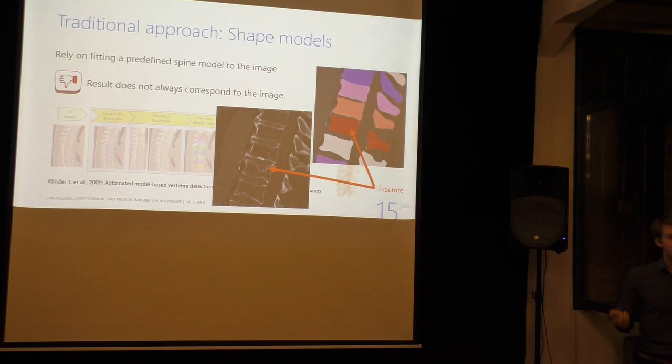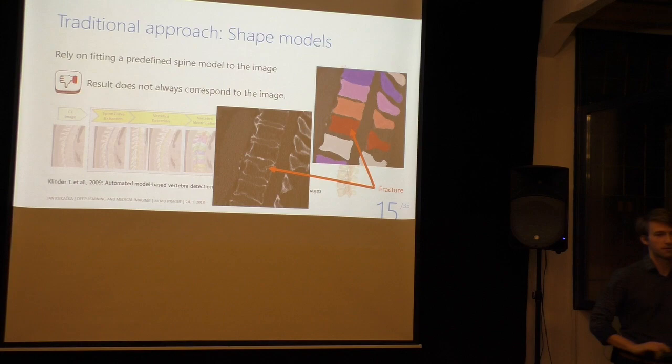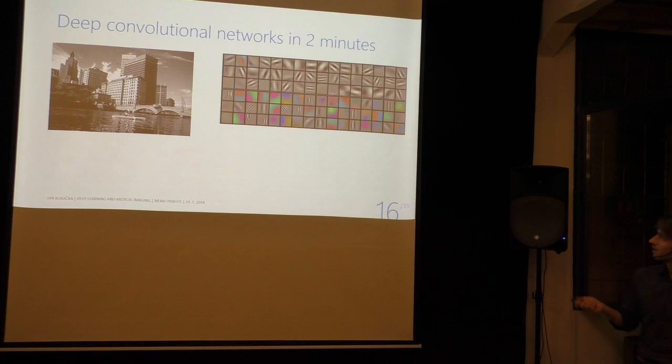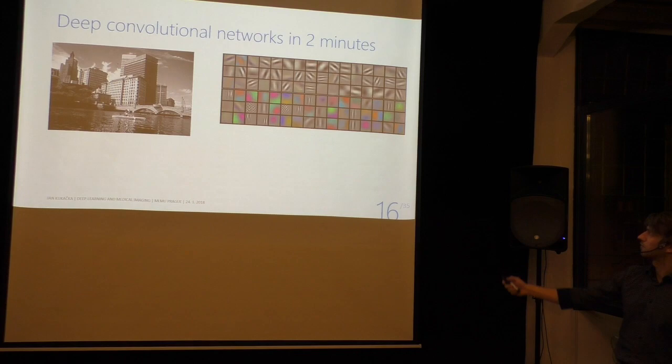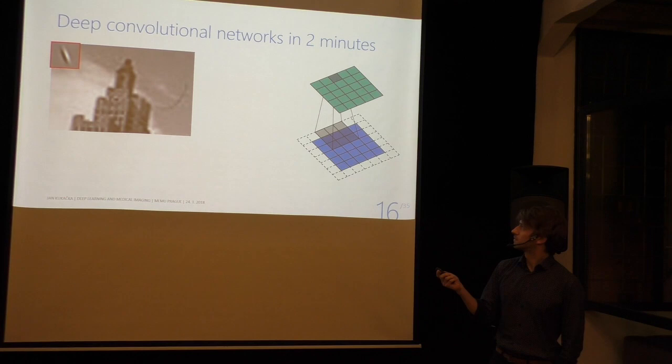Here we are finally getting to the part you came for: deep learning. I'm going to do a very ambitious thing and try to explain deep learning in five minutes, even for people who've never heard of it before. Imagine you have a picture and you want to know what's in it. You have a set of convolutional filters that you apply on the image in a moving fashion — moving the filter to every possible location in the image. The blue thing is the image, the moving shadow is the filter, and the green thing is the response to the filter, which we call a feature map.